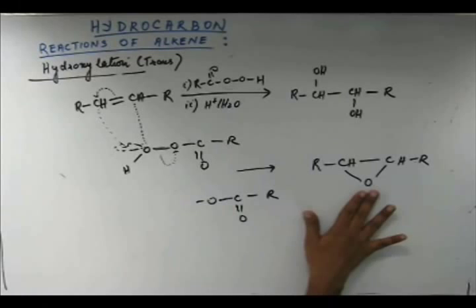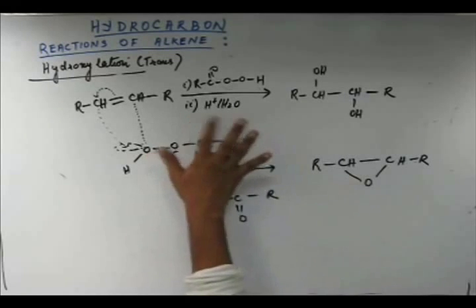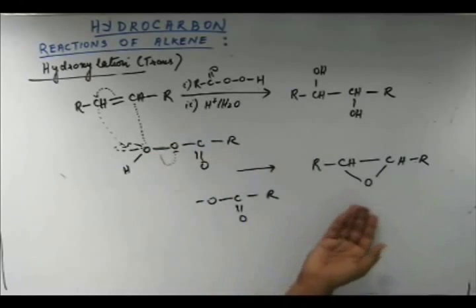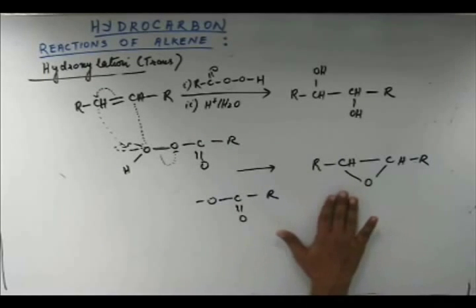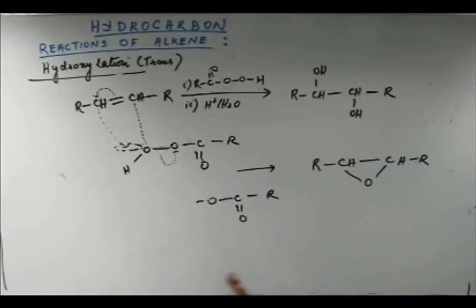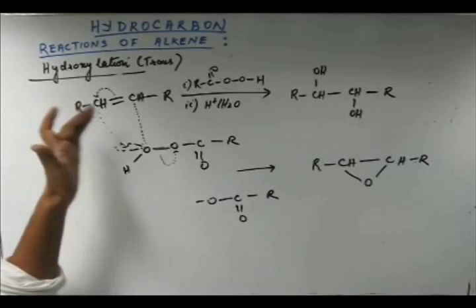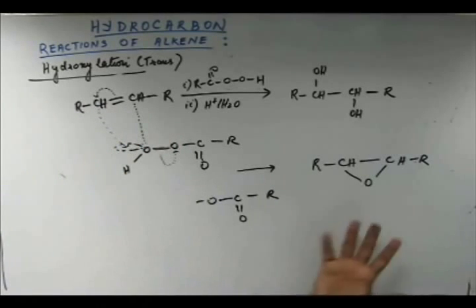So we have this as an intermediate. This is the final product if we don't carry out hydration. Now since we are carrying out hydration, further reaction will occur on this epoxy ring. But this is the product and this can be given as an individual reaction. We have alkene and we have a peroxy acid and this is what we get, a three-member epoxy ring.